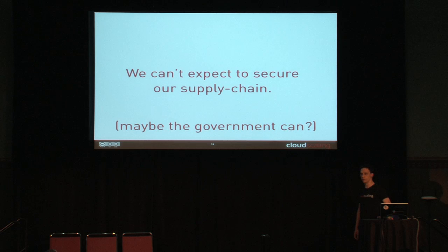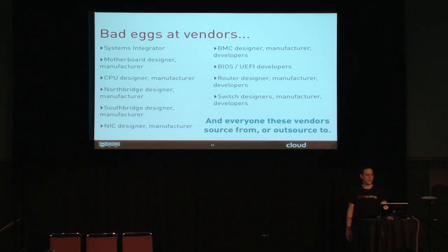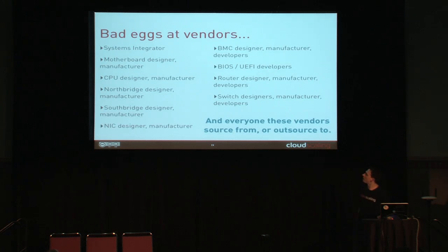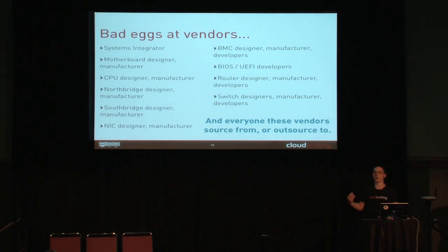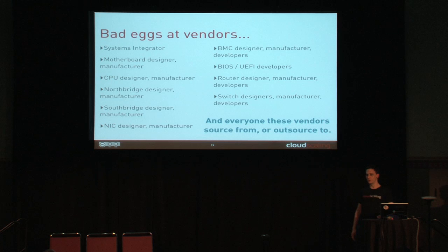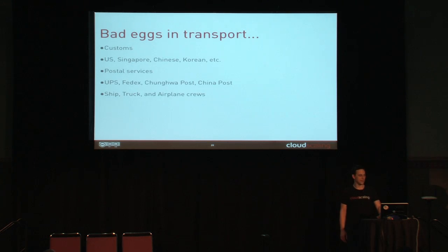Some things we can't fix at all include our supply chain. We can't necessarily trust that somebody is not going to do something at your vendor — someone in your transport, customs, postal services, FedEx, shipping and receiving, anyone at any of these vendors. People who could design your CPUs, your systems integrators, motherboard designers, BIOS, UEFI developers, router designers, manufacturers, switch designers, Southbridge designers, NIC designers and manufacturers. You have to trust all of these people. If you use TXT, secure boot, TPMs — all of these things can be circumvented. Unfortunately there's nothing we can do about it, so we have to accept that we're going to fail here.